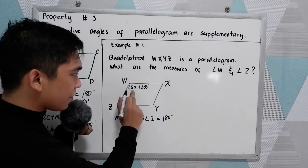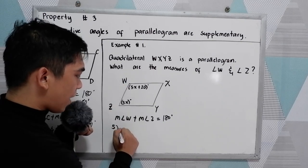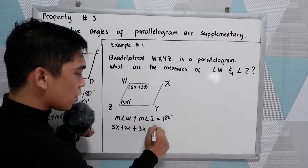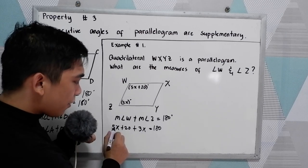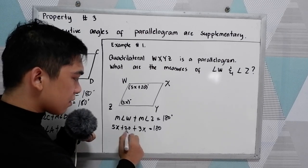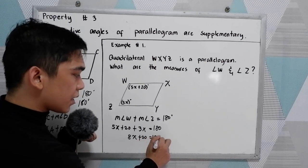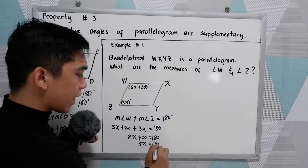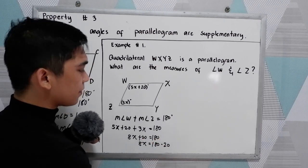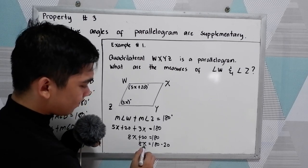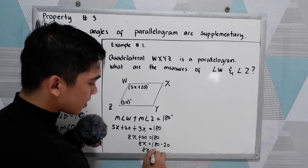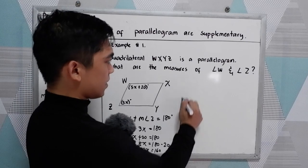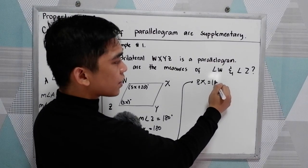Now substitute our given values: angle W is 5X plus 20, plus angle Z is 3X, equals 180. Combining like terms: 5X plus 3X is 8X, plus 20, equals 180. So 8X is equal to 180 minus 20, which gives us 160.